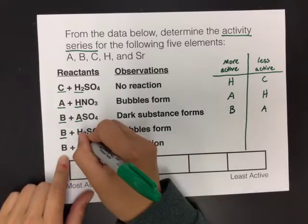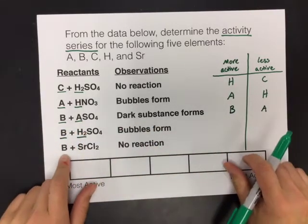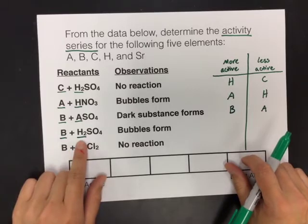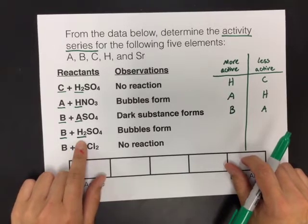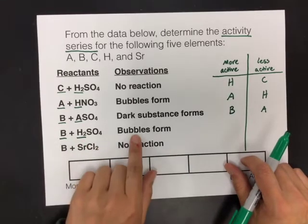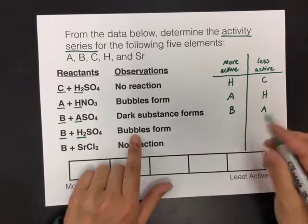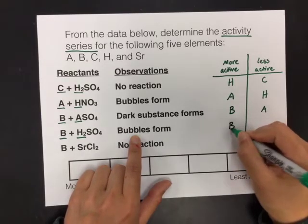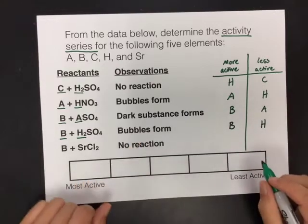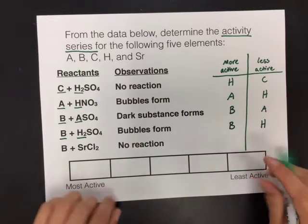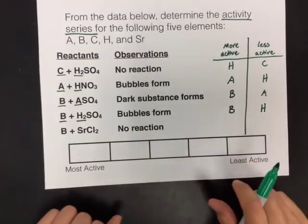The next one, B reacting with sulfuric acid. B was trying to kick out H. Was it able to do so? Yes, because we got a reaction. So B was strong enough to kick out H.